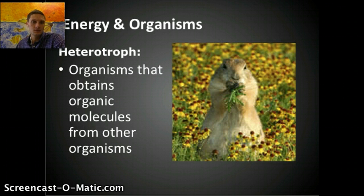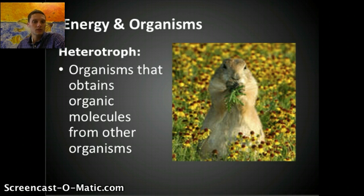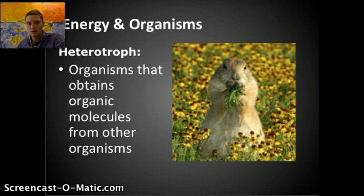Heterotrophs are organisms that obtain their organic material or molecules from other organisms, so they have to do this by eating different things. There can be multiple levels of heterotrophs: primary consumers, secondary consumers, and tertiary consumers. We can label things as herbivores, omnivores, or carnivores. A consumer is essentially anything that consumes other organisms in order to obtain organic matter — something that is living or has recently been killed.